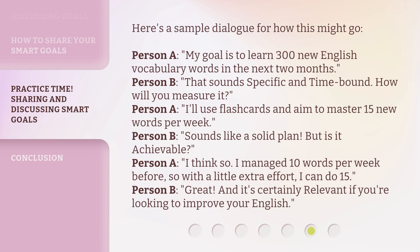Here's a sample dialogue for how this might go. Person A: My goal is to learn 300 new English vocabulary words in the next two months. Person B: That sounds specific and time-bound. How will you measure it? Person A: I'll use flashcards and aim to master 15 new words per week. Person B: Sounds like a solid plan. But is it achievable? Person A: I think so — I managed 10 words per week before, so with a little extra effort, I can do 15. Person B: Great. And it's certainly relevant if you're looking to improve your English.